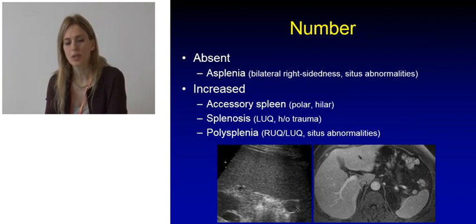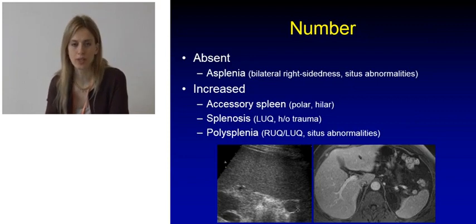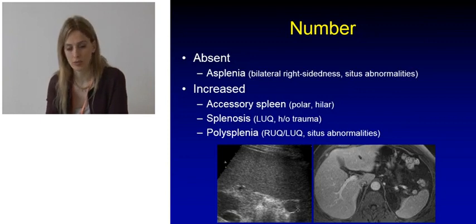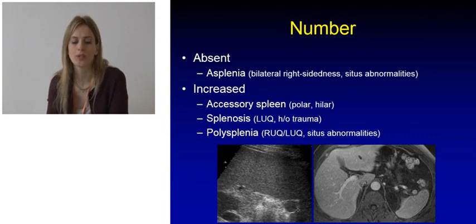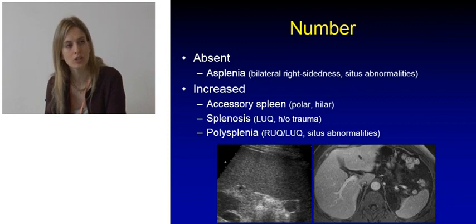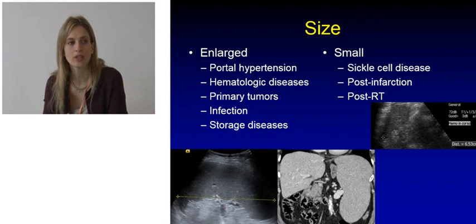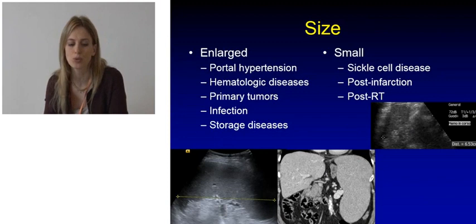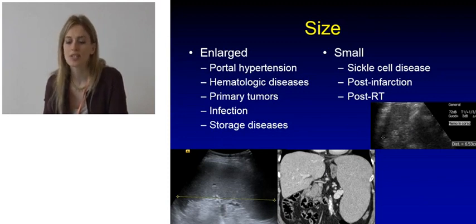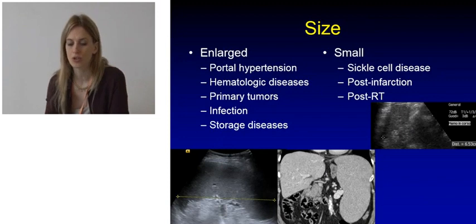Starting with the number of spleens, we can have no spleen at all in what is called asplenia, which is often correlated with situs abnormalities, or we can have an increased number of spleens — most commonly with accessory spleens, but also splenosis with several spleens in the left upper quadrant, and polysplenia. Regarding size, the spleen can be enlarged — typically in portal hypertension, but also in hematologic diseases, primary tumors, infection, and storage diseases — or it can be small, as in sickle cell disease, post-infarction, or post-radiation therapy.